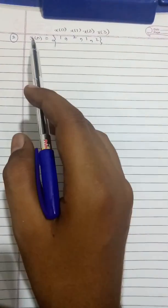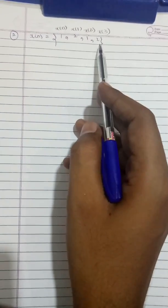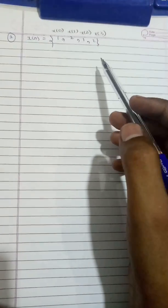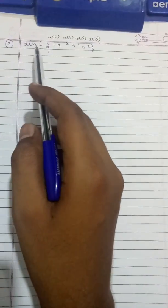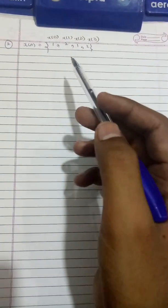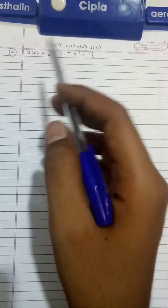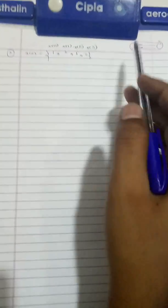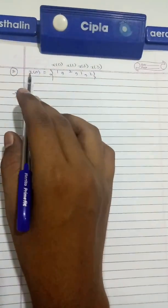The next question: X of n is given as 1, 2, 1, 2, and we have to find X of K as well as the inverse of X of K. In exams, you may be asked to find the inverse DFT of a given sequence. Here we will solve both the DFT as well as the inverse DFT.